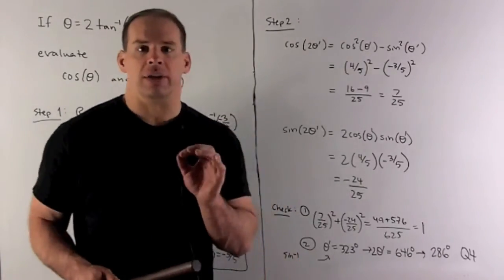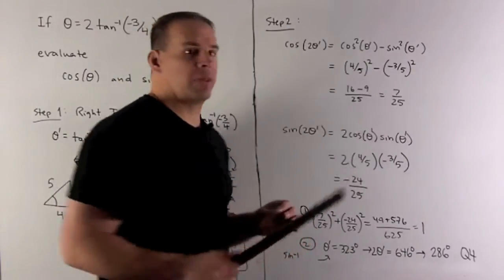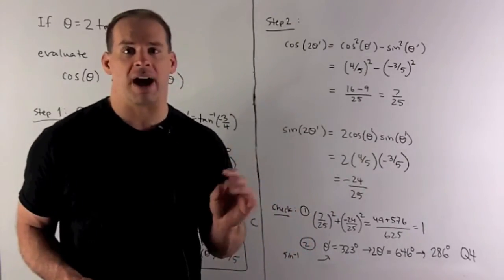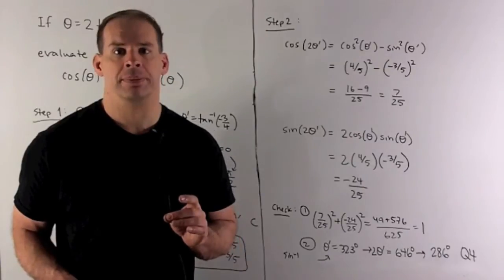Things are looking good. If you notice, our numbers are the numbers that would go with seven, 24, 25, right triangle.